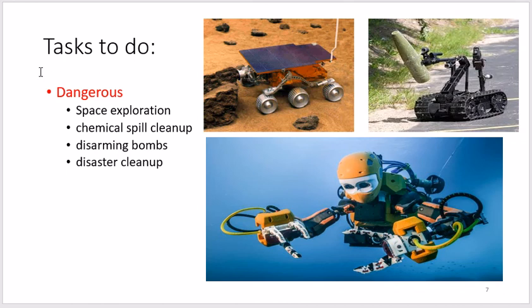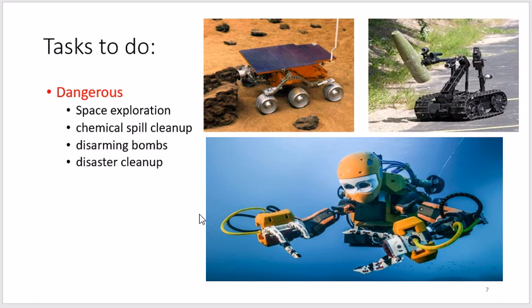Tasks that robots can perform include dangerous tasks — those that are life-threatening for humans. Examples include space exploration: no human has reached Mars, but a robot has, and probes have even passed Jupiter. Other dangerous tasks include disarming bombs — military robots are used for diffusing bombs and inspecting dangerous areas where mines are present — and underwater welding, which is difficult and dangerous for humans. Robots are also used for disaster cleanup after disasters.